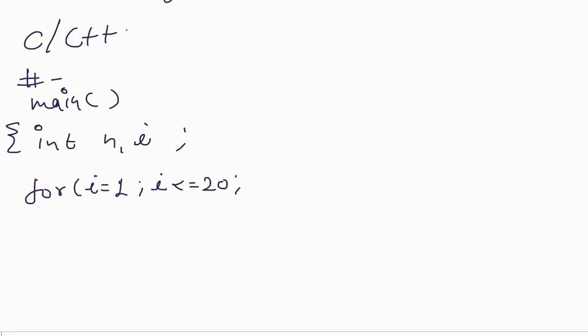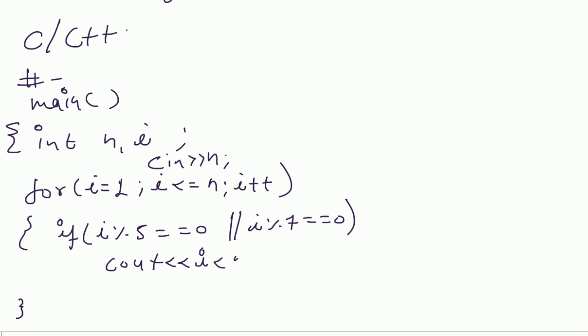We need to take n and here you just take cin, cin n to input. Then i plus plus. Very easy question. Here we just put a condition: if i percent five equal to equal to zero or i percent seven equal to equal to zero, in these conditions we just cout the i and space. That's your question.